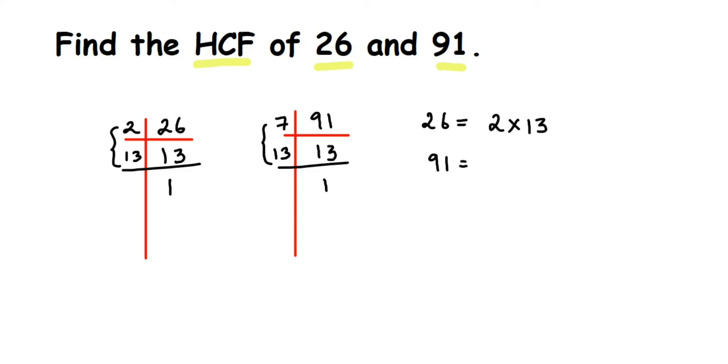Now once we have written this, we have to find out the highest common factor. So we're going to take the common factors. 13 is present in both of them, so the highest common factor will be 13. Now suppose there's some other number which is common, then you have to take that number also and multiply. So highest common factor of 26 and 91 is 13.